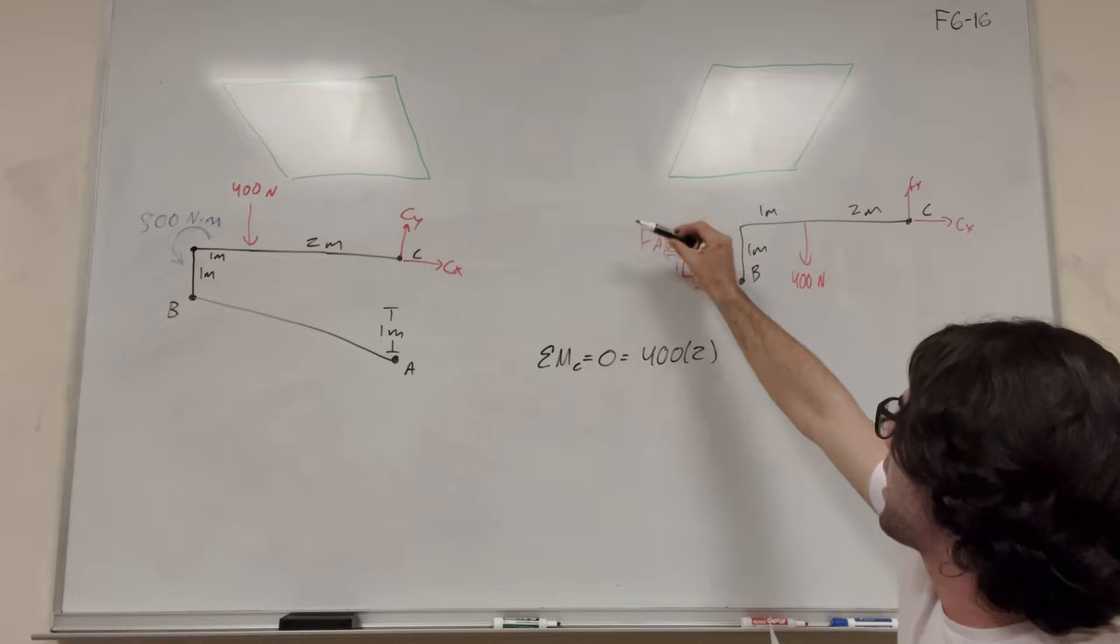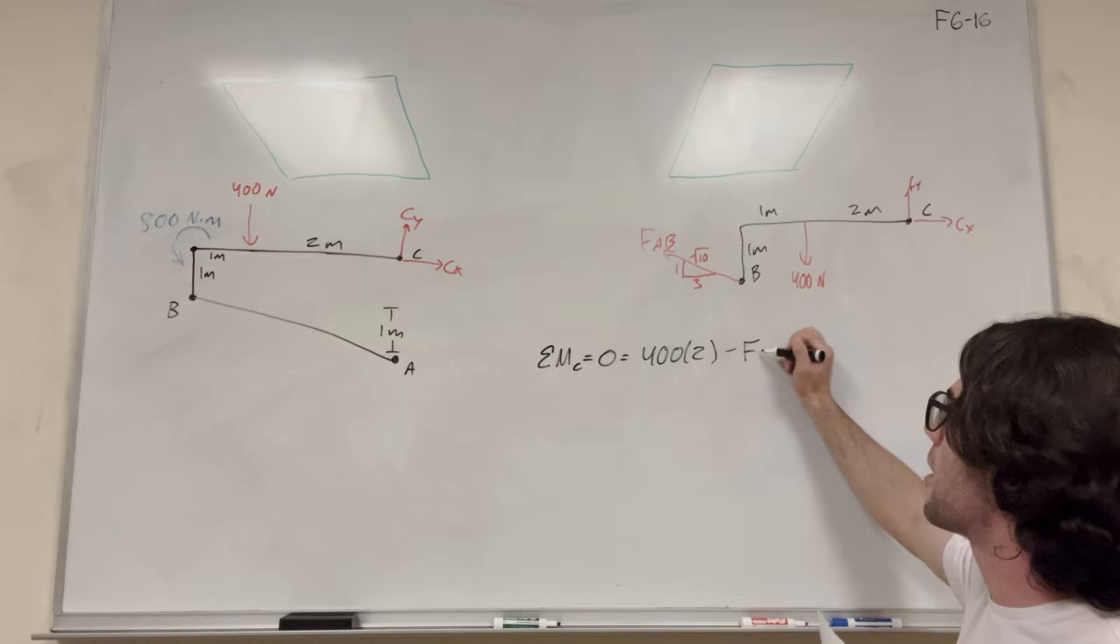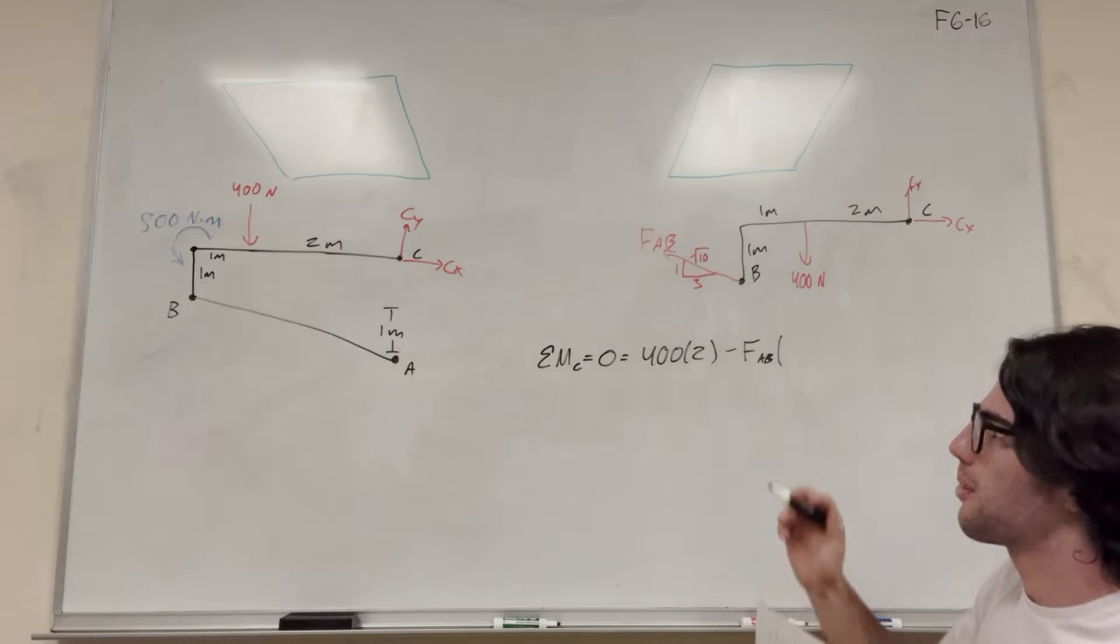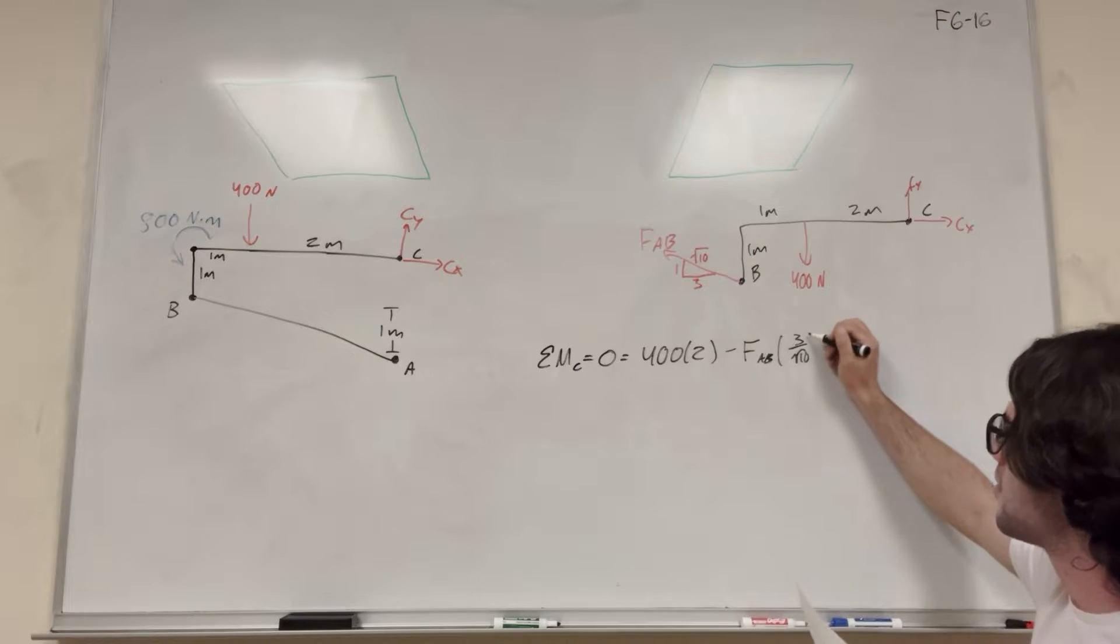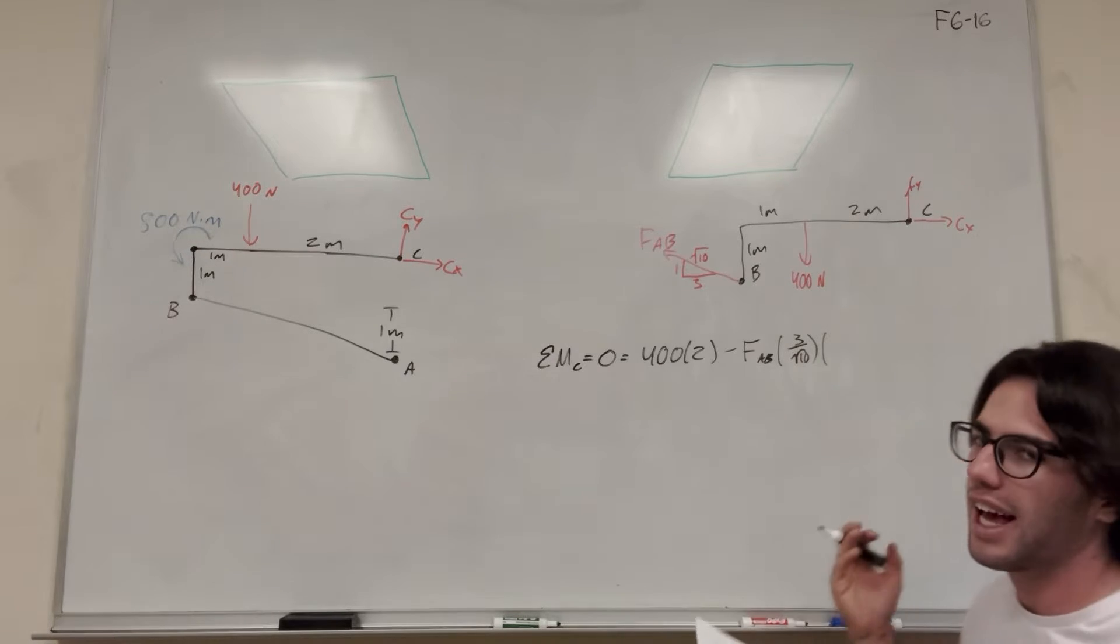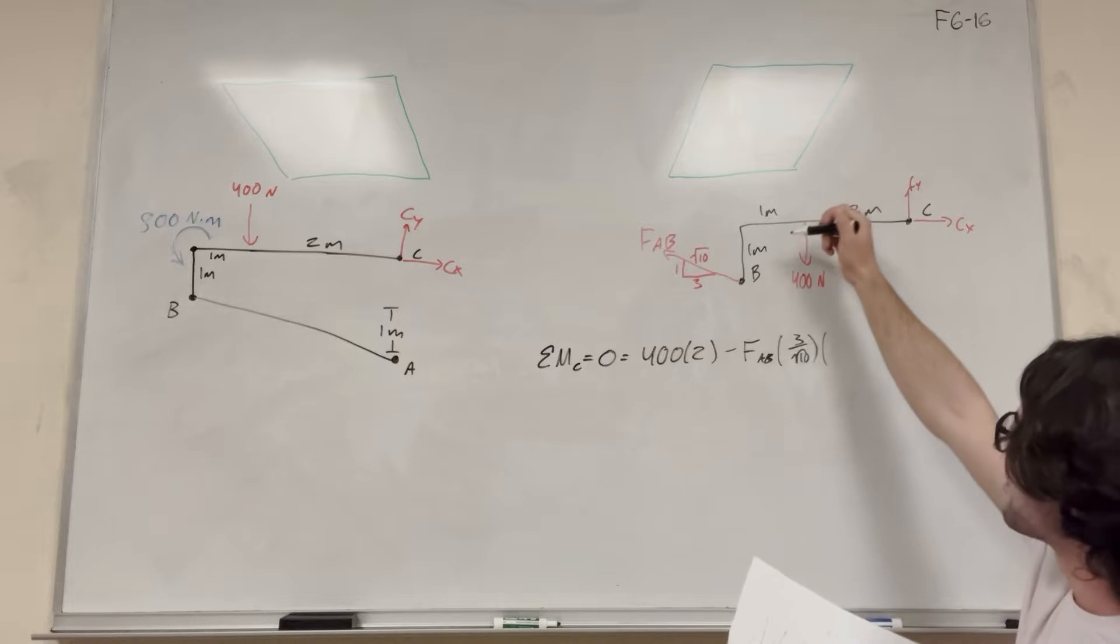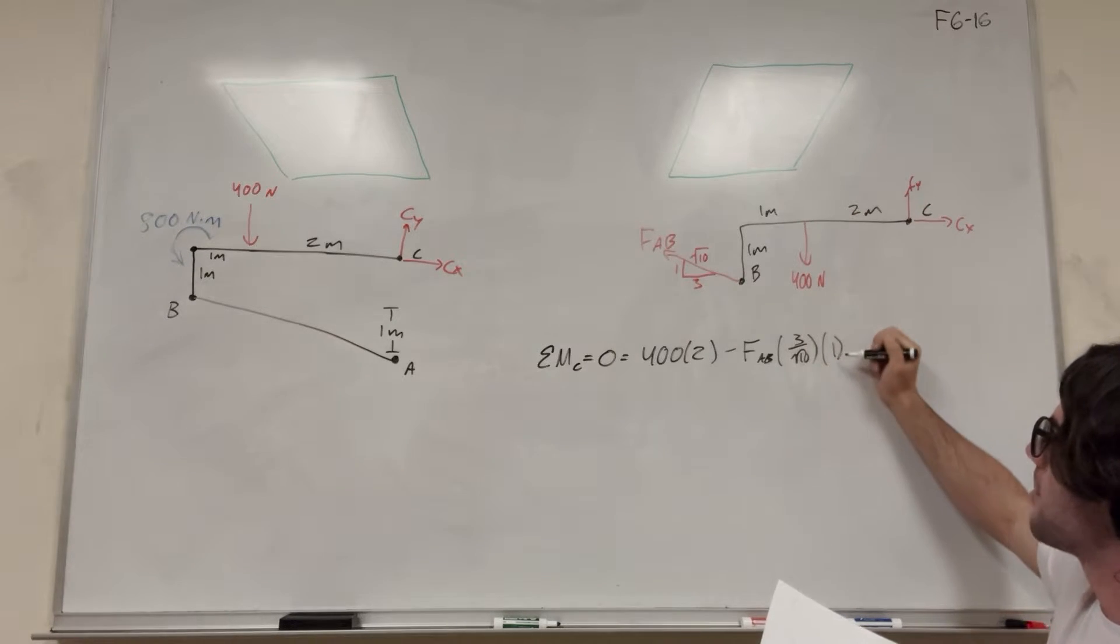So it's going to be subtracting the X component. So force AB. If we're finding the X component of force AB, we're going to take the X and divide it by the hypotenuse. So it's going to be 3 over square root of 10. And if we're doing the X component, we multiply it by the distance in the Y direction. Its distance in the Y direction away from C is just one meter down, so times one.